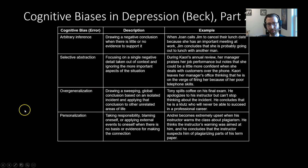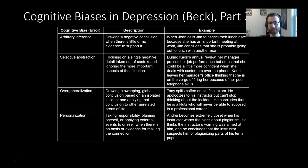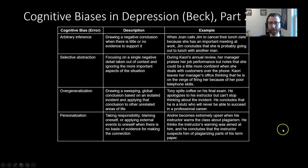Overgeneralization is another example — making a sweeping global conclusion based on an isolated incident. For example, Tony spills coffee on his final exam and, despite apologizing to the instructor, cannot stop thinking about what a klutz he is, concluding he'll never be much good at anything because he's so clumsy. That's taking one small example and drawing a sweeping, overly general conclusion.